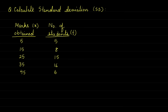To solve this standard deviation question, first we need to find out the FX values. FX means the product of the X value and the F value for all corresponding values of F and X. So the values will be: first, five into five is twenty-five, then fifteen into eight, and so on.